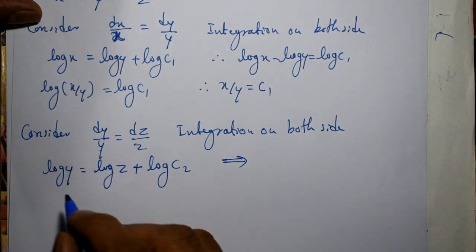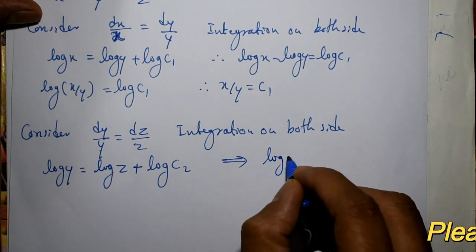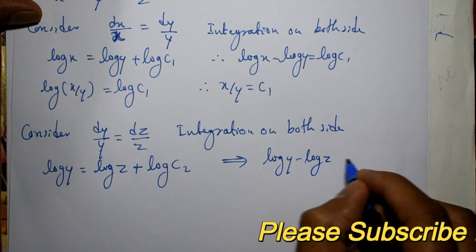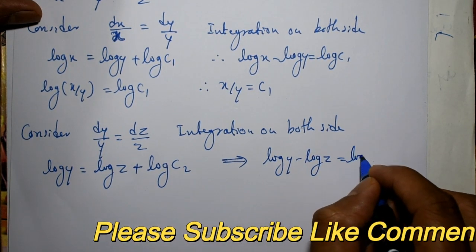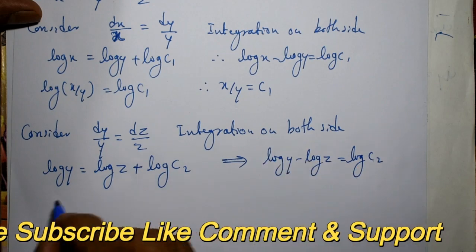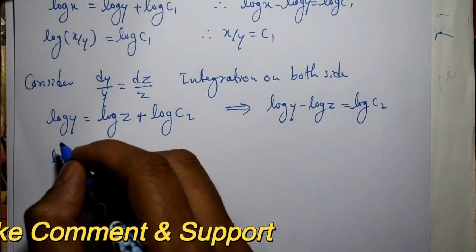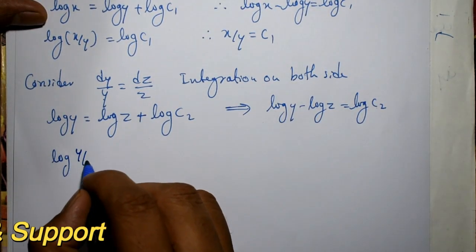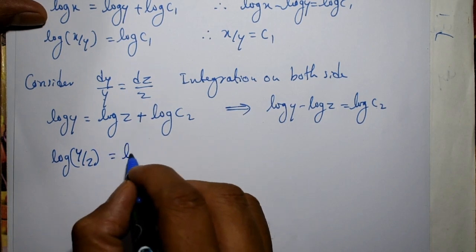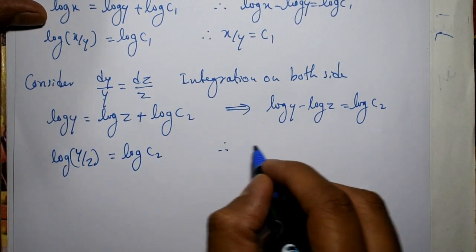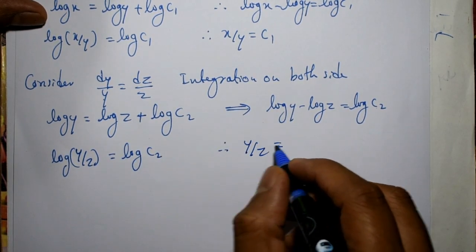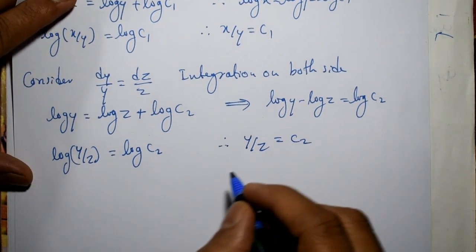Now shift left hand side, that is log y minus log z equal to log c₂. Using log property, that is log(y/z), and this is equal to right hand side, it is log c₂. Now therefore y/z is equal to c₂.